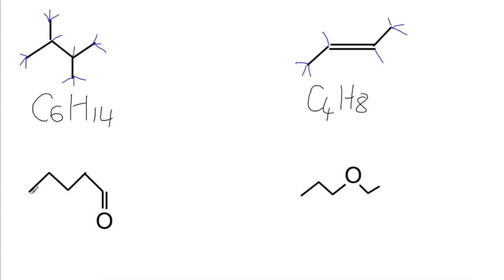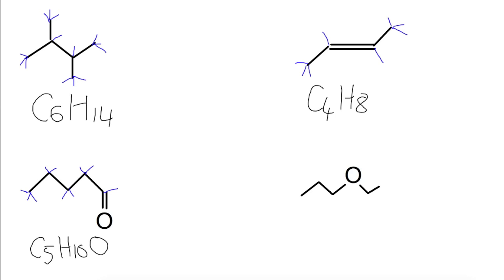For this aldehyde, putting in lines to show where the hydrogens would be — each carbon needs to have four bonds — we count five carbons, C5, and ten hydrogens plus an oxygen, giving C5H10O. For the final molecule, an ether — ethoxypropane — we have three hydrogens at the end of one chain, then two, another two, two more, and then three. That gives five carbons, twelve hydrogens, and an oxygen: C5H12O.